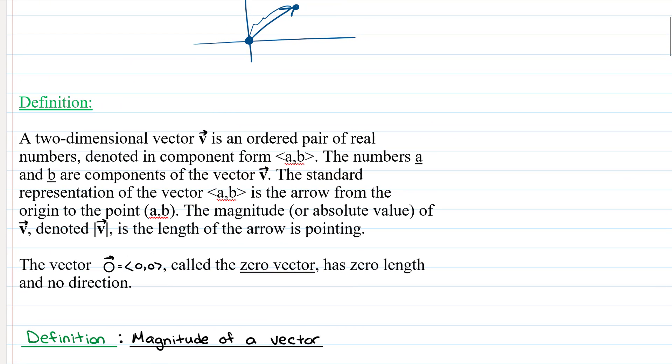So again, for example, the vector a comma b would look something like this, where this is the point a comma b.